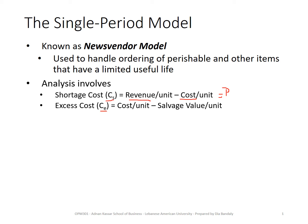The excess cost, CE — what is the excess cost? If you ordered 100 and demand turned out to be 80, you will end up at the end of your selling season with 20 units on hand that you cannot sell. If you're holding newspapers, after the day ends you cannot sell them anymore, and most probably you're going to discard all of them. So you lose the cost you paid when you purchased them from the supplier.